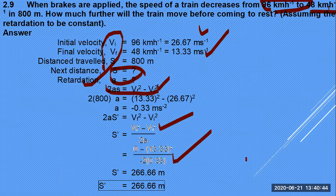Key technique reminders: when brakes are applied, final velocity is zero; when a body starts from rest, initial velocity is zero; when moving at constant velocity, use v = s/t. Decide intelligently which condition applies. With this, we close today's class. Thank you for your patience. I hope you understood how to solve problems linked to kinematics.